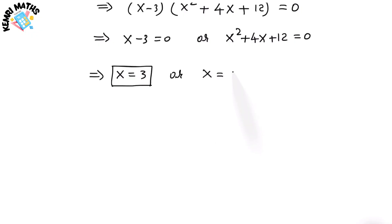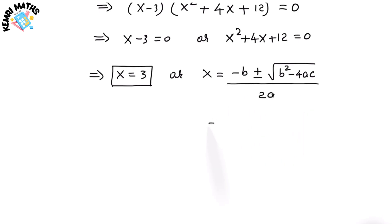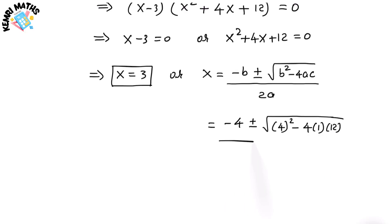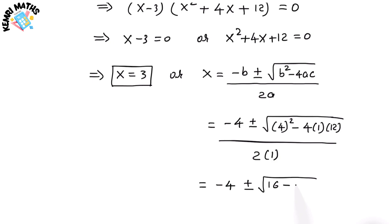The quadratic formula is x = (−b ± √(b² − 4ac)) / 2a, where a = 1, b = 4, and c = 12. So x = (−4 ± √(16 − 48)) / 2 = (−4 ± √(−32)) / 2.